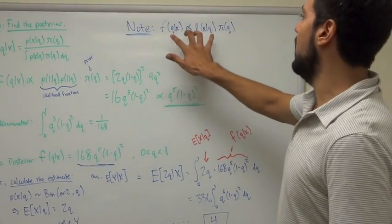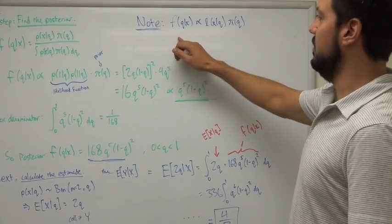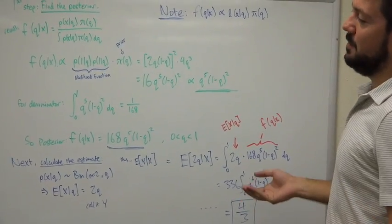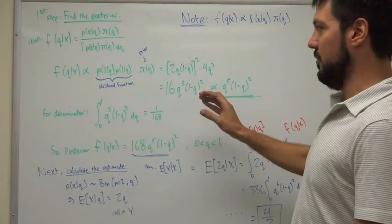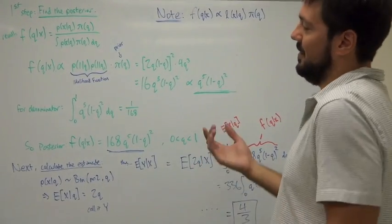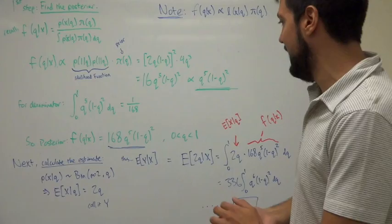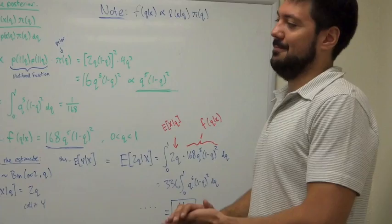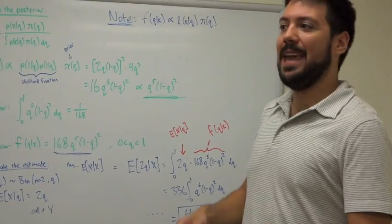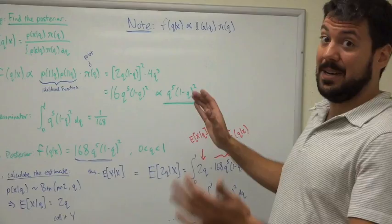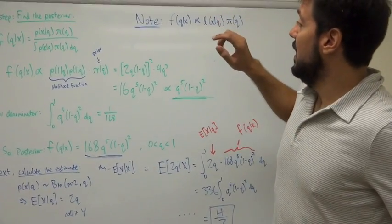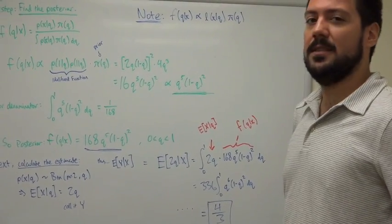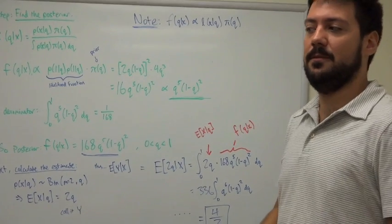The proportionality property — that the posterior is proportional to the likelihood times the prior — was helpful here. In this problem, the brute-force approach would have been manageable, but in other problems, especially with continuous distributions involving gamma functions or single-parameter Pareto distributions, the calculation can become a huge mess. This proportionality property saves you a tremendous amount of time, especially when sitting for the actual exam.